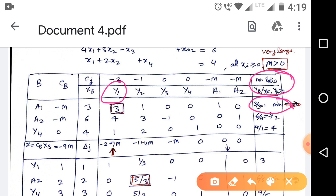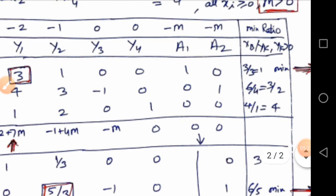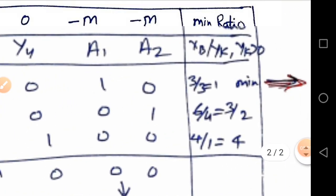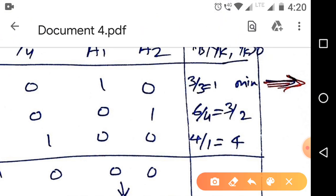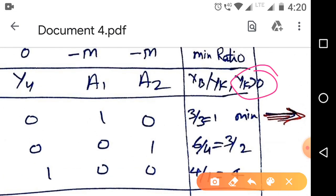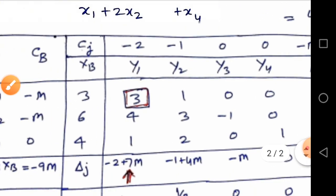Students, some students have difficulty to calculate minimum ratio. Minimum ratio is XB over yk where yk greater than equal to zero. Avoid zero and negative value of yk.